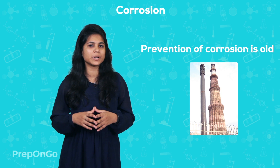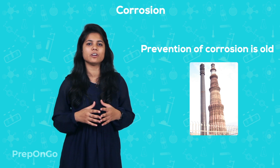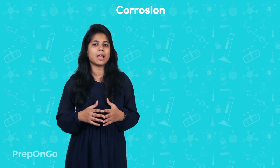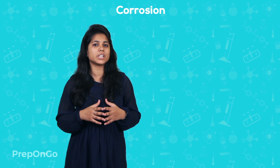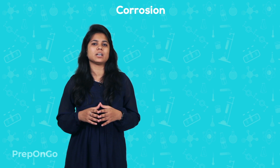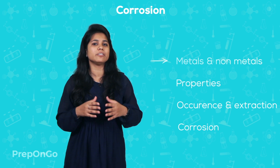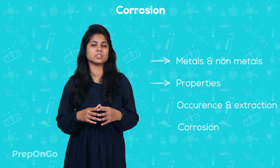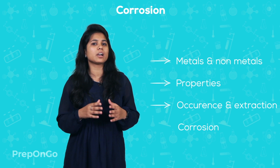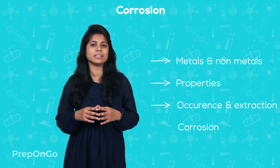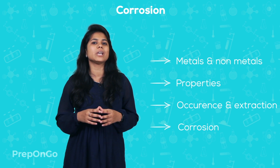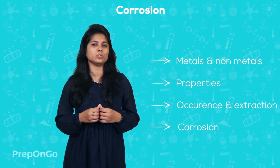This brings us to the end of the chapter. In this chapter, we have studied what metals and non-metals are and their different physical and chemical properties. We have also seen the occurrence of metals and their extraction, and finally, we have studied corrosion.